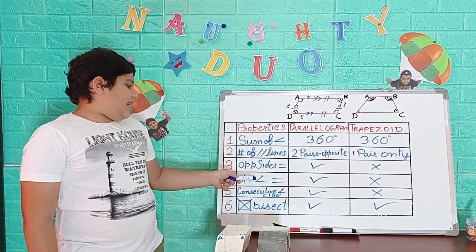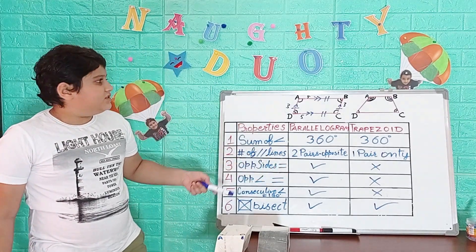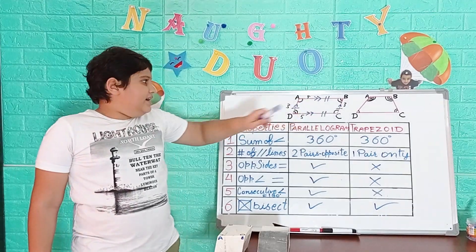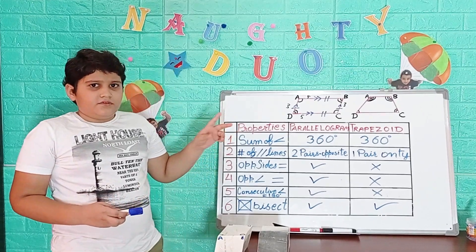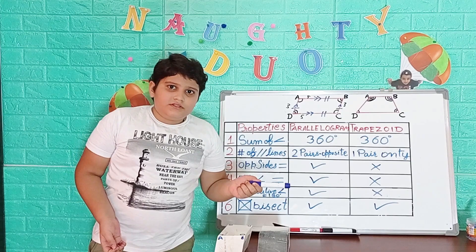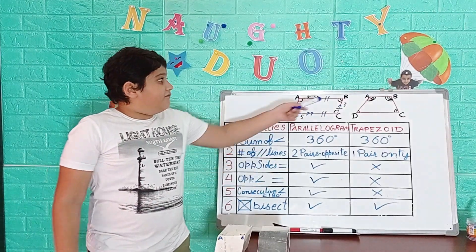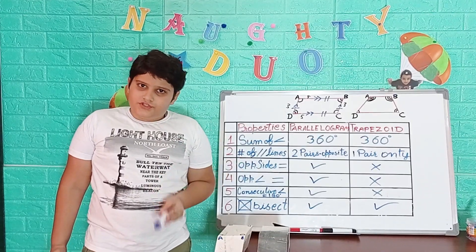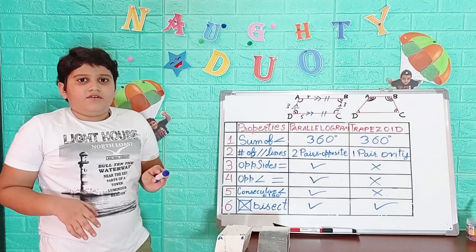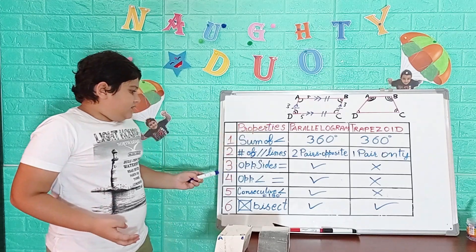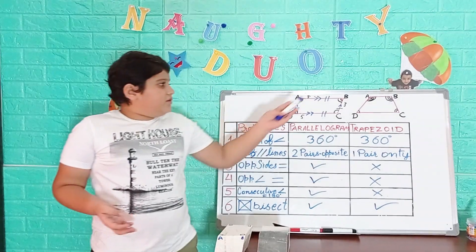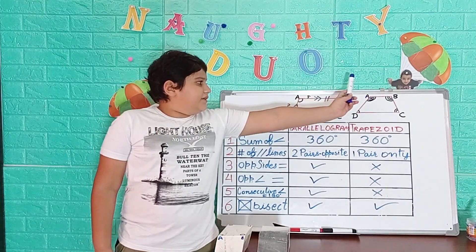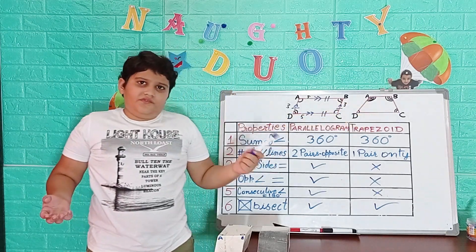Property four: opposite angles are the same. In a parallelogram, angle A equals angle C and angle B equals angle D. For example, if A is 50 degrees, then C is also 50 degrees, and B and D are both 130 degrees, since the sum of all angles must be 360 degrees. This property is true for the parallelogram, but for the trapezoid, all angles are different — if A is 50 degrees, C can be 80 or 100 degrees, so this property is false for the trapezoid.